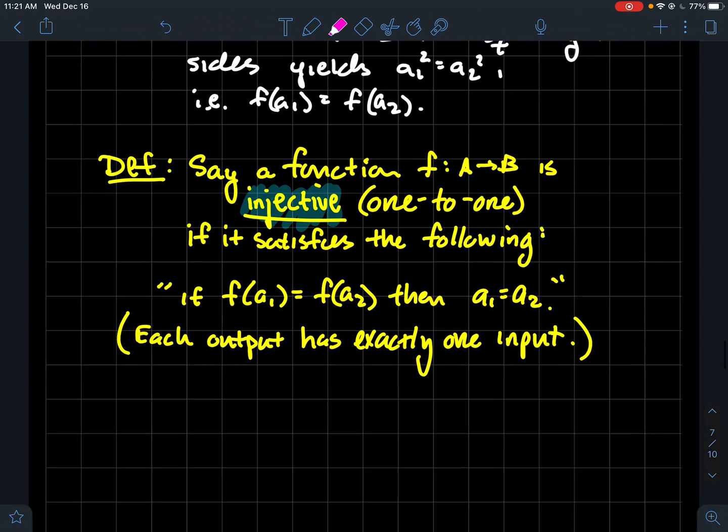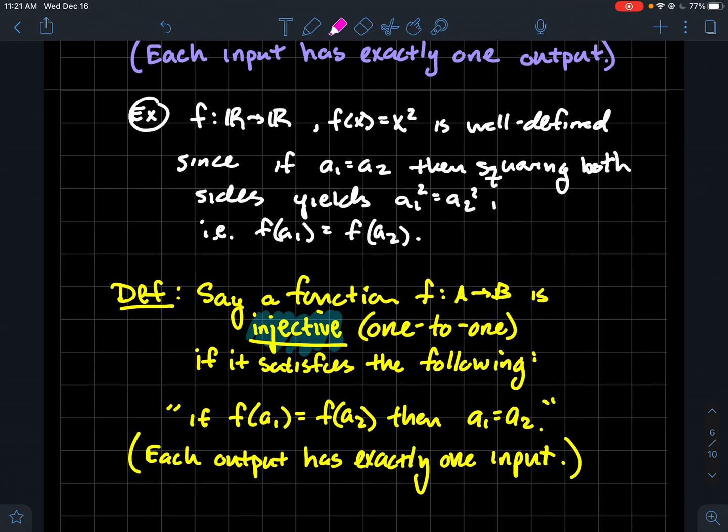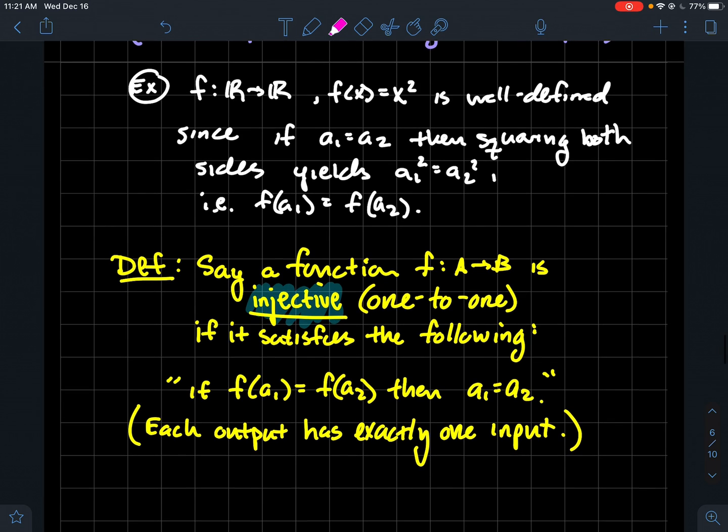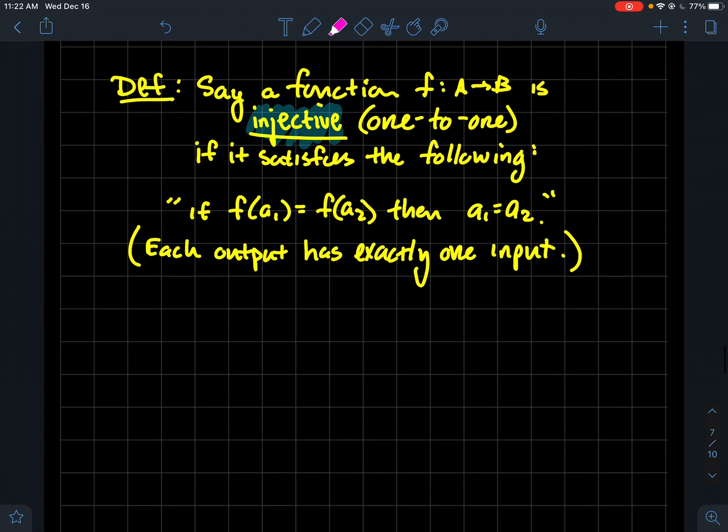So again, in maybe people words rather than mathematical symbols, each output has exactly one input here. If you think about it, that's sort of like a converse to well-defined. We kind of switched where input and output goes. So injective and well-defined are commonly mixed up. Students commonly mix those up. So try to keep those straight in your head.